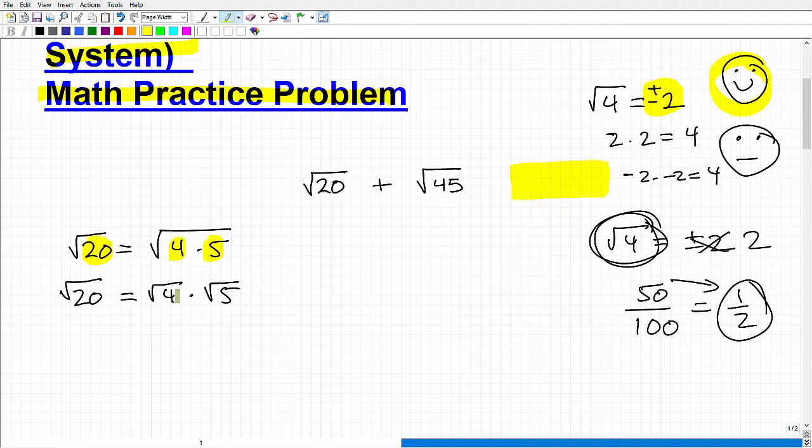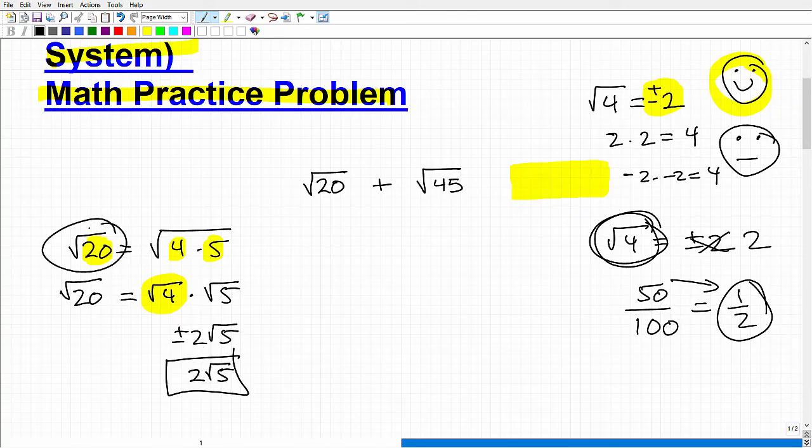By doing that, I can simplify this expression. I get the square root of 4, and we know that's plus or minus 2. We'll just write it as 2 square root of 5 for the purposes of this problem. So the square root of 20, you would want to simplify it and write it as 2 square root of 5.